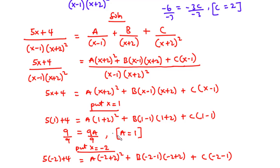Now let's find the value of B. Since putting x equals negative 2 won't eliminate all unknowns, we put x equals 0. At x equals 0, none of the constants go to 0, but since we have the values of A and C, we can substitute those values to find B.